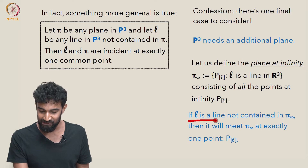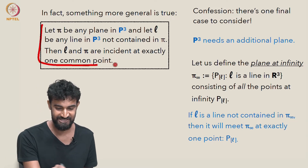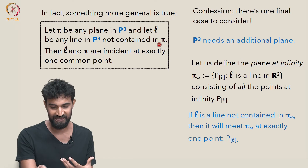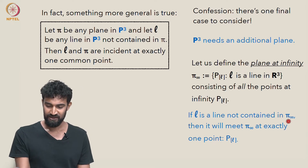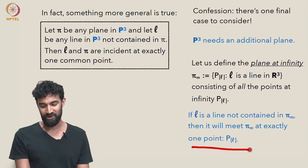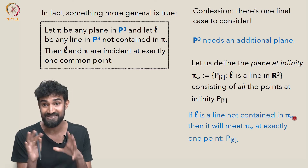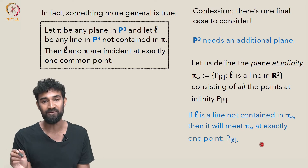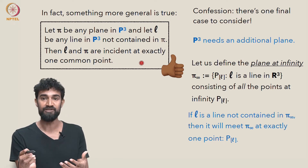If L is a line not contained in pi infinity, and our plane pi is pi infinity, then L is going to meet pi infinity at exactly one point — its own point at infinity. If L is not contained in pi infinity, it's not a line at infinity; it's an ordinary line. So it'll have one point at infinity, pl, and it's therefore going to meet pi infinity at exactly that one point. So that proves this statement, which is a fundamental incidence property in P3.